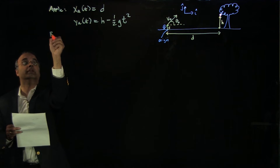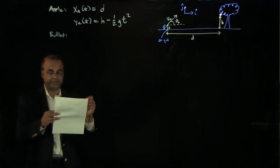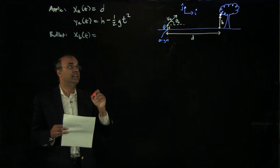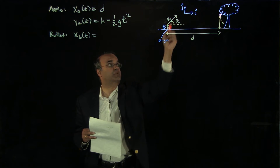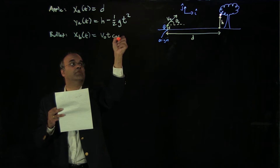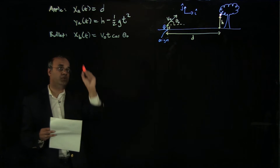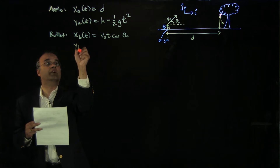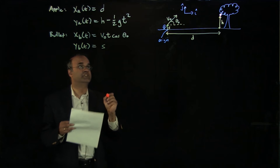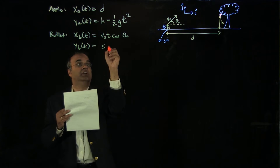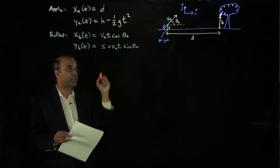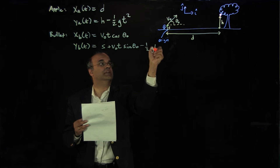For our projectile — let's call it a bullet — the x-coordinate starts at x = 0. Its horizontal velocity component is v-naught times cosine of theta-naught, so its x displacement at time t is v-naught·t·cos(θ₀). There's no horizontal acceleration. For the y-coordinate, it starts at height s, with vertical velocity component v-naught·sin(θ₀), giving y = s + v-naught·t·sin(θ₀) − ½gt².